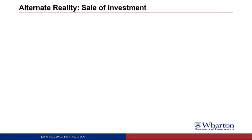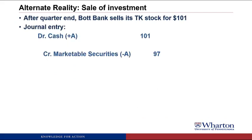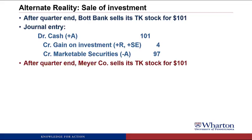Now let's sell the investment. After quarter end, BOT sells the TK stock for $101. We receive cash of 101 and take off the marketable securities at their last balance sheet date value, which is 97. Here we need a plug that's a credit, so this is going to show up as a gain on investment of four. That gain of four is going to show up on the income statement and eventually work its way to stockholders' equity.